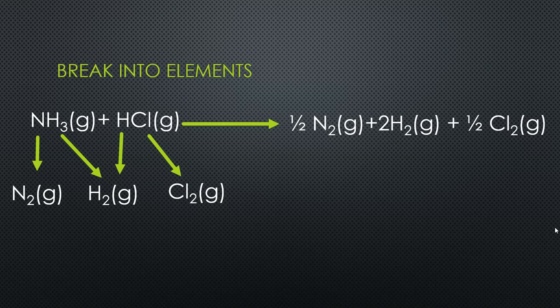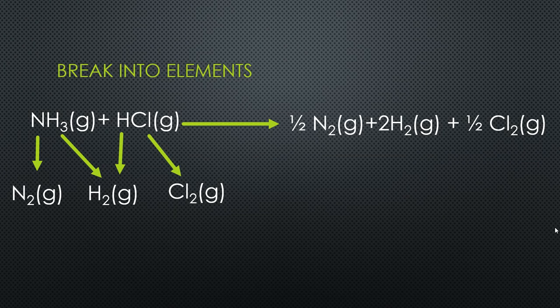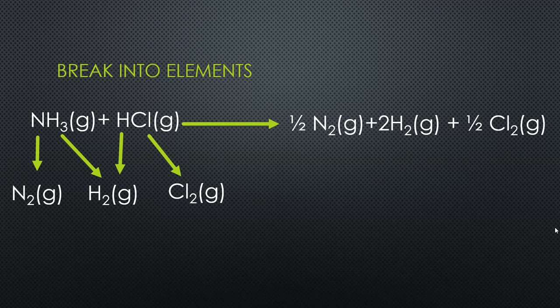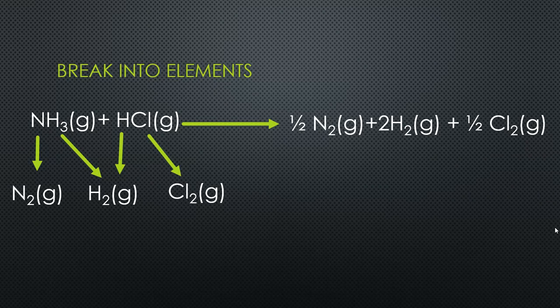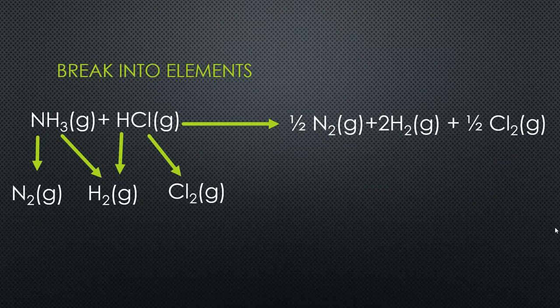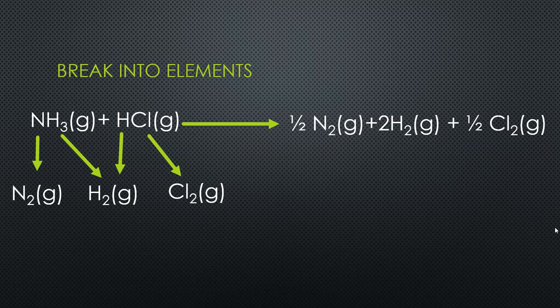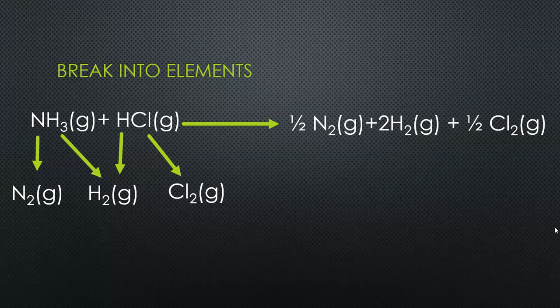So it's actually going to break down like this. You can see that on the left you've got one nitrogen, and on the right you've got half of N2, which is also one nitrogen. You've got four hydrogens on the left and four hydrogens on the right. You've got one chlorine on the left, one chlorine on the right. This is showing you the decomposition into elements and it works out nicely.